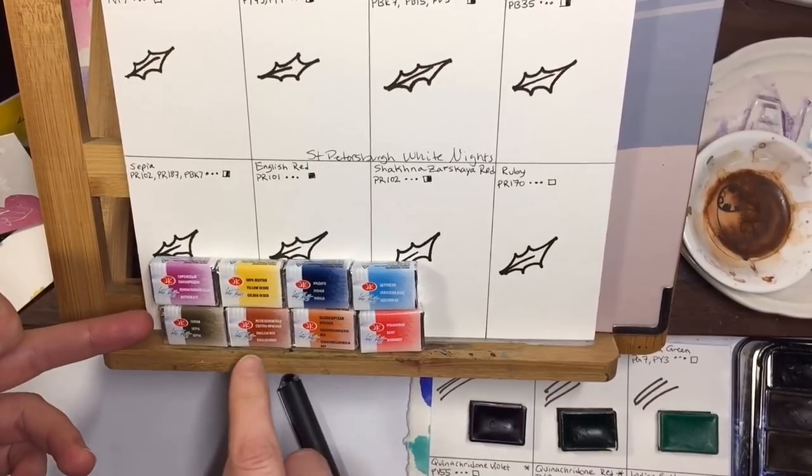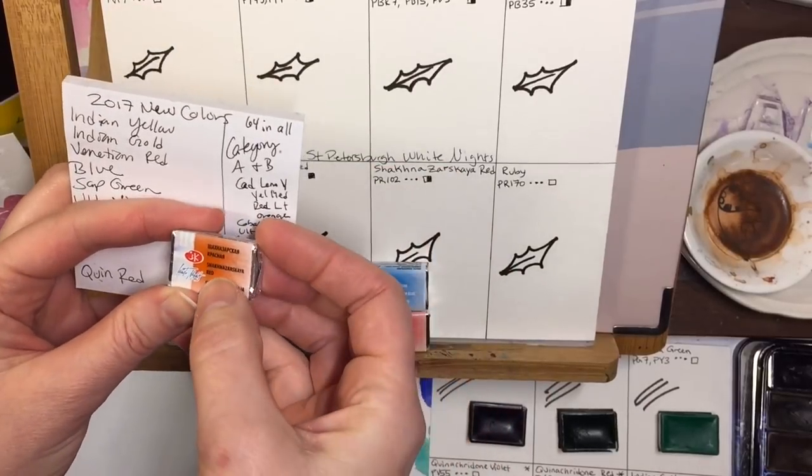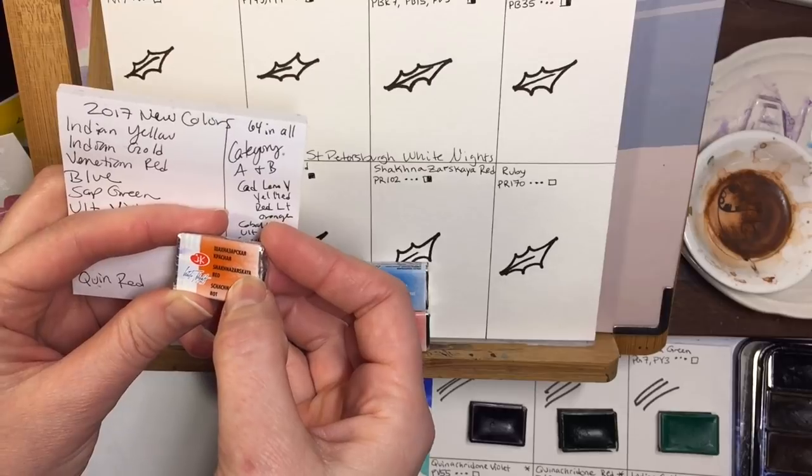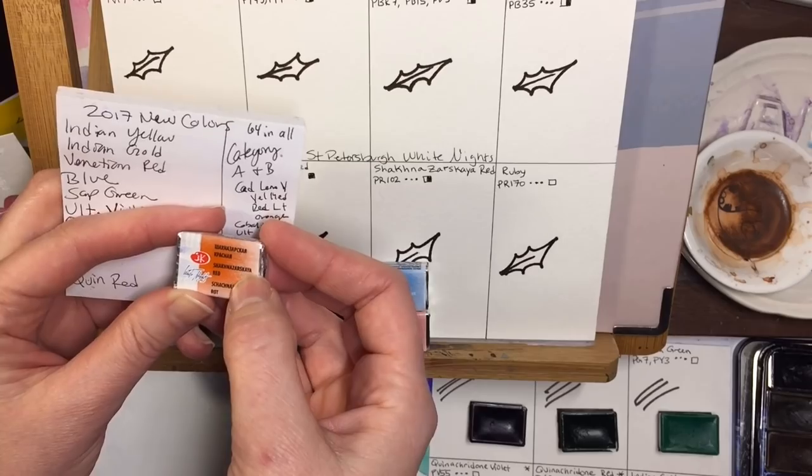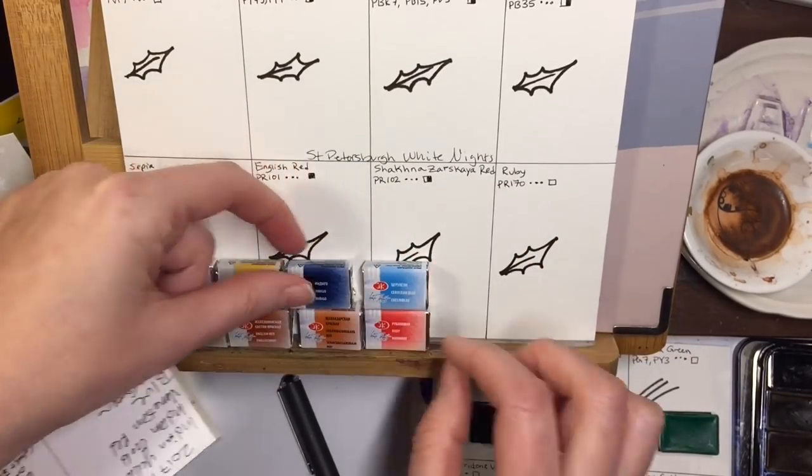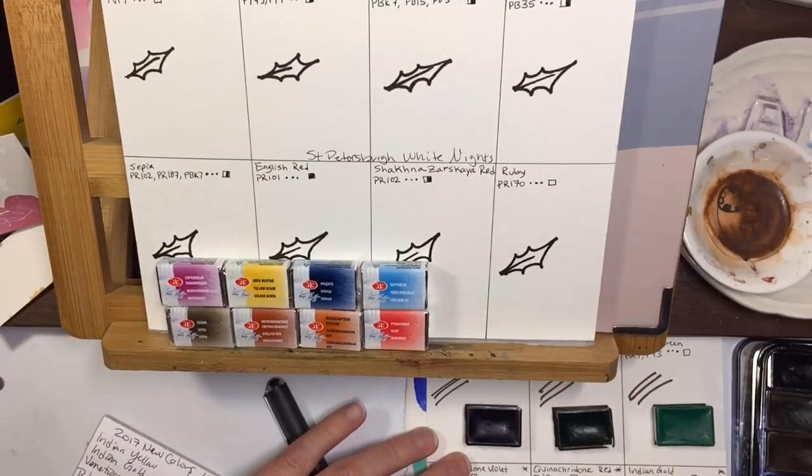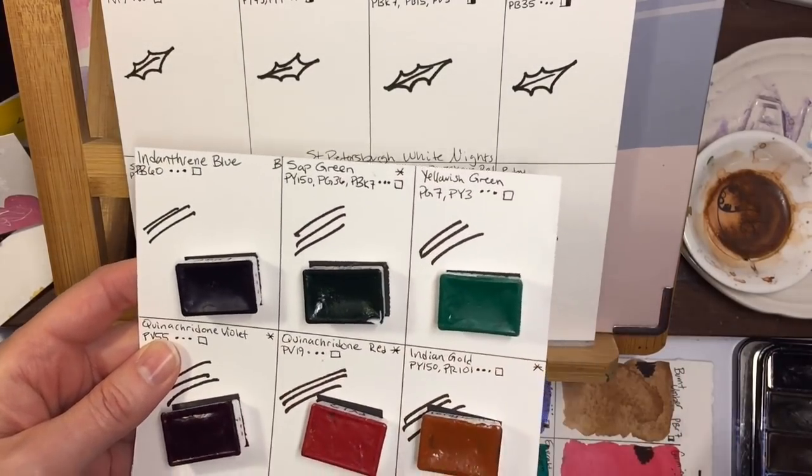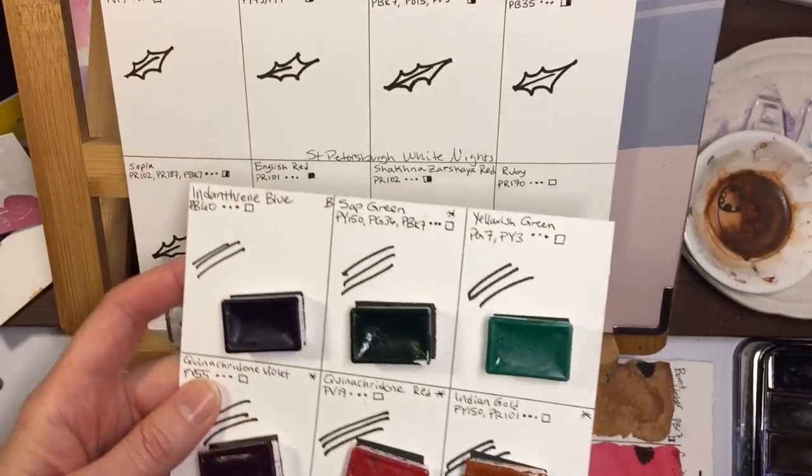It's sepia, English red. This is a very hard word to pronounce, Shakna Zarskaya. I can't say it. That's a PR102 and a Ruby. So I'm pretty excited about these. I never swatched out these prior six that I got and there's some new ones in this batch.